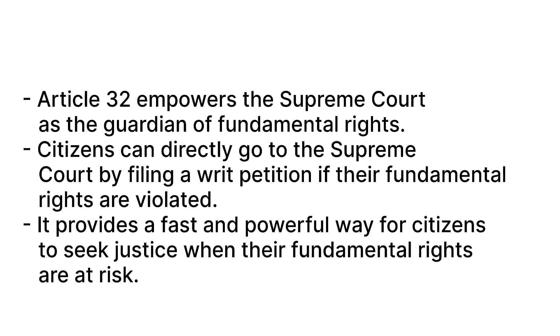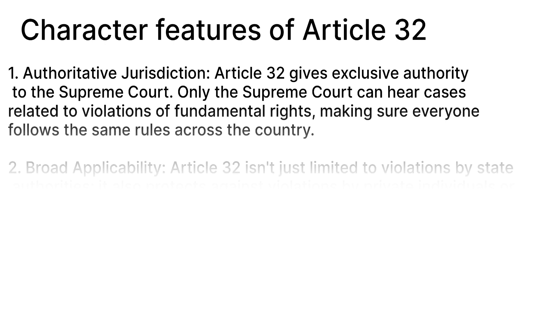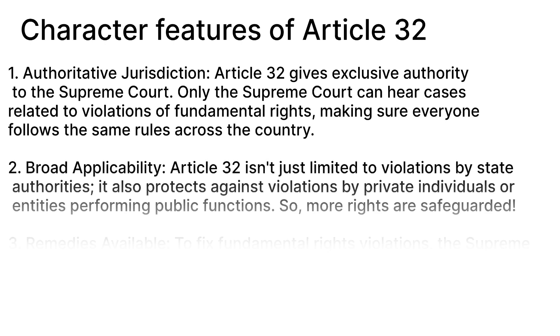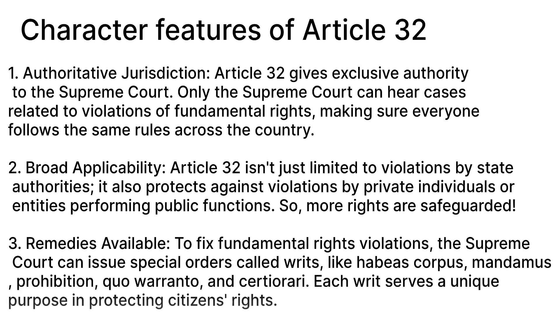Now, we will see the characteristics and features of Article 32. First is the authoritative jurisdiction. Article 32 gives the Supreme Court exclusive, meaning a special authority. Only the Supreme Court can hear and decide cases related to violations of fundamental rights, to ensure that the same rules are followed across the entire country.